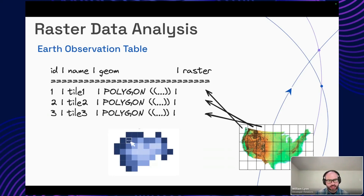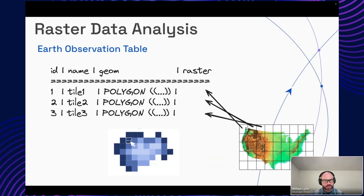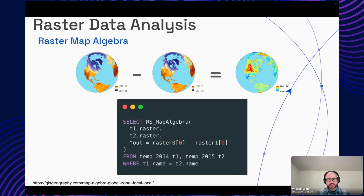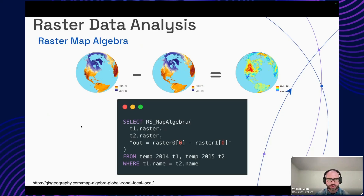Raster data — things like satellite imagery or population estimates — is gridded data where each cell maps to some area on the surface of the Earth and has one or more values in bands. Satellite imagery could have a three or four band raster with visible spectrum red, green, and blue values. When working with large raster data, we typically tile it, where each tile represents one row in the table. To query it, we work with individual cell values — for example, taking the average Earth surface temperature over two years and subtracting the difference using a map algebra spatial SQL function to find where the Earth was warmer or colder from one year to the other.